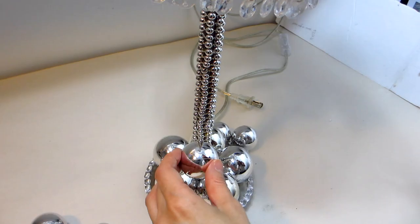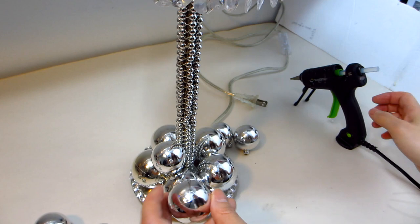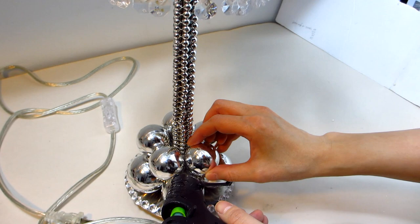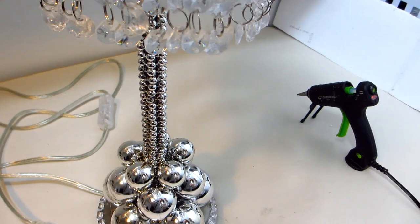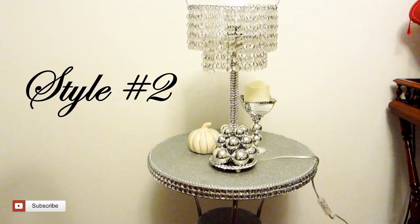For the next level up, secure the medium sized ornament balls followed by the smallest sized ornament balls. You can see here they are being placed in a pyramid like fashion. And here's a final look for style number two of our elegant crystal chandelier lamp.